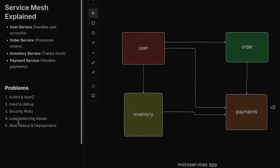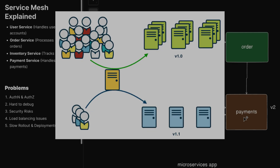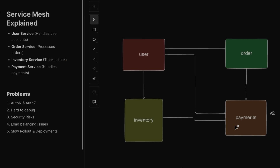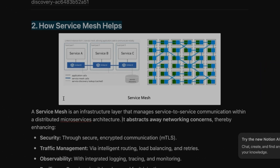The next problem is load balancing — for example, the order page getting heavy traffic while inventory doesn't, so traffic needs to be handled properly. And lastly, slow rollout and deployments: consider you have a new version of a payment service and want it shown only to 10% of users — a canary deployment — which is very difficult to handle with microservices. All these problems can be solved using service mesh.